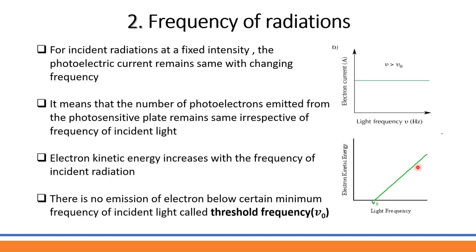The second factor is the frequency of incident radiation. In this experiment, the radiation intensity is kept fixed and constant while the frequency is varied. It was observed that when frequency increases, the photoelectric current remains the same, but the electrons' kinetic energy increases with frequency.